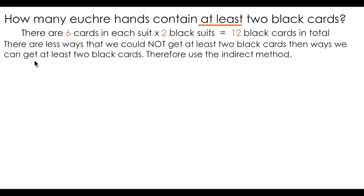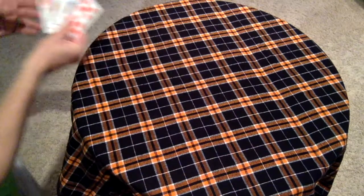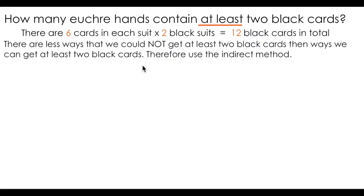Sounds like a lot of work. You'll note that there are actually less ways that we could not get at least two black cards than there are ways that we can get at least two black cards. I could have zero black cards or one black card. Looking at two cases is much less time consuming than looking at the case where I have two, three, four, and five black cards. Therefore, we're going to use the indirect method. Remember, the indirect method is looking at the cases where we don't get the scenario we're interested and subtracting it from the total number of cases possible.